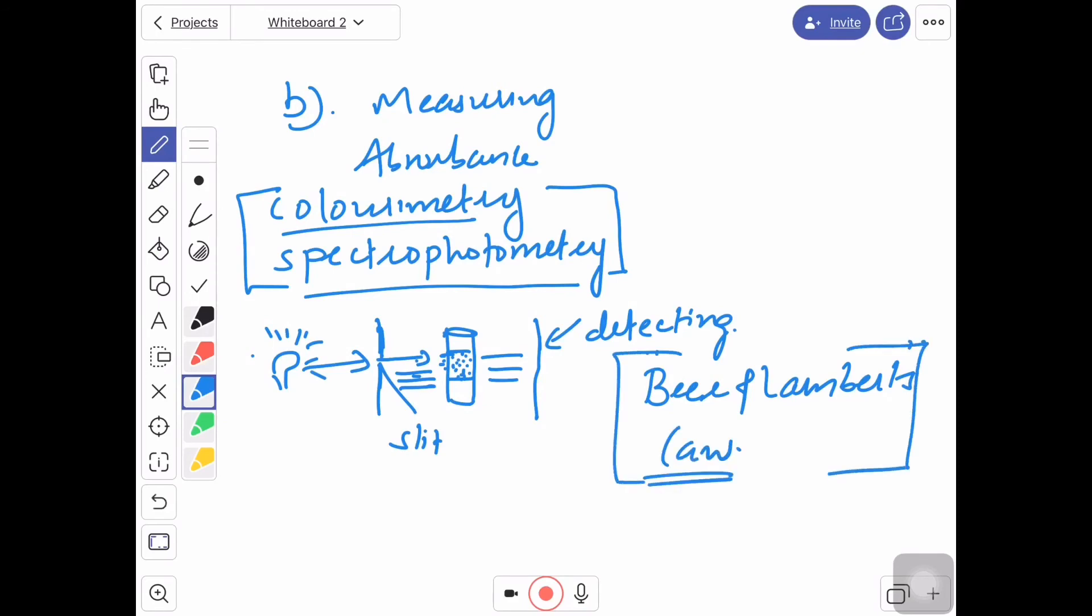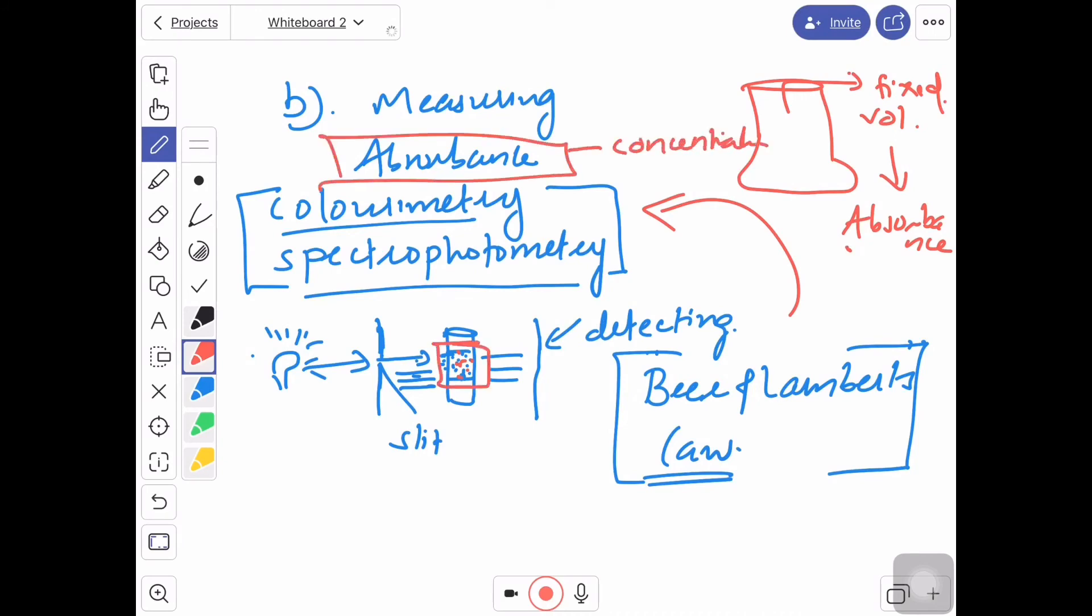There are two scientists who proposed this: Beer and Lambert. Beer-Lambert's law actually proposed this type of assessing concentration, and their principle is used for assessing concentration in colorimetry and spectrometry. We take out a fixed volume and we assess absorbance. Absorbance means the amount of light absorbed by these cells. That absorbance can be equated to the concentration.